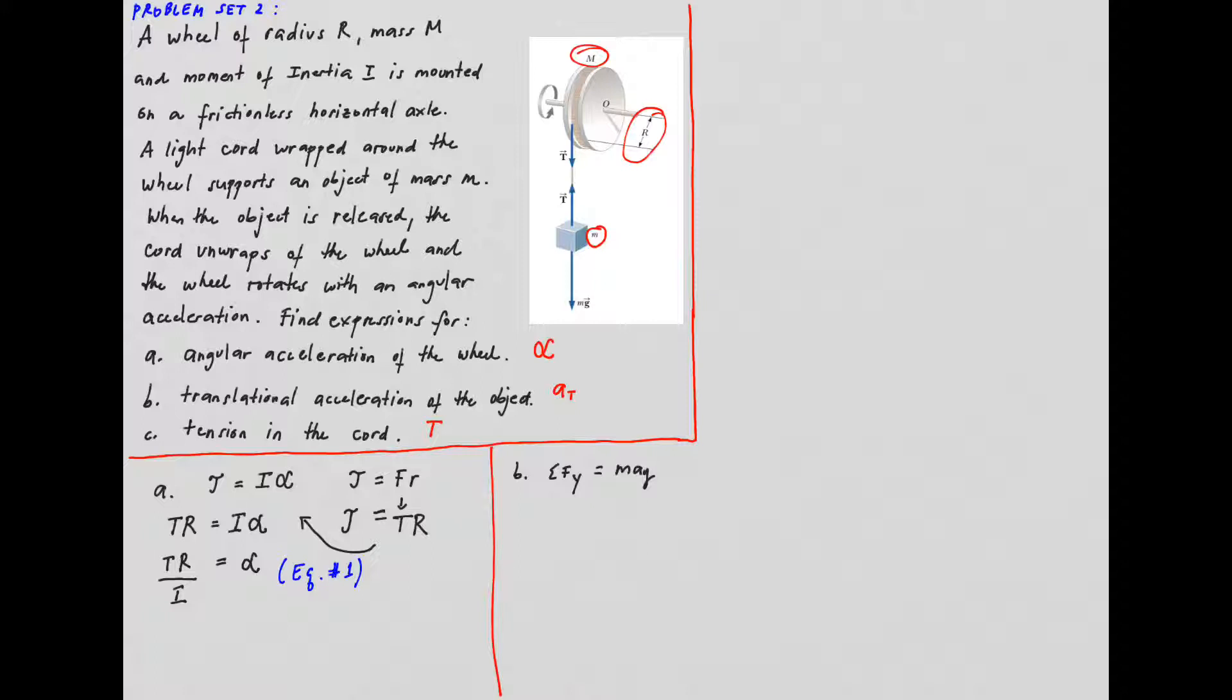Now, we all know that the summation of Fy, that is tension minus the weight, equals mass times acceleration. Since it is going down, we could say that we have negative acceleration.